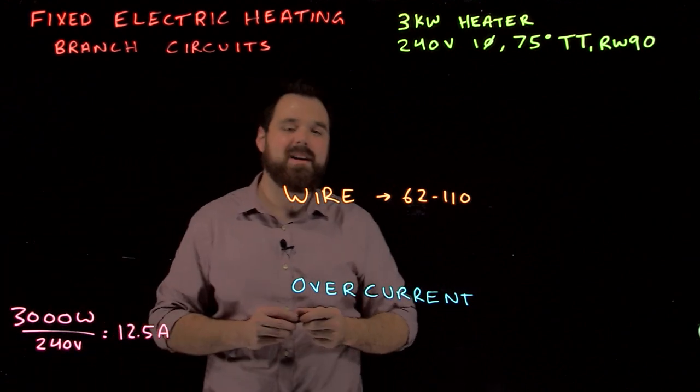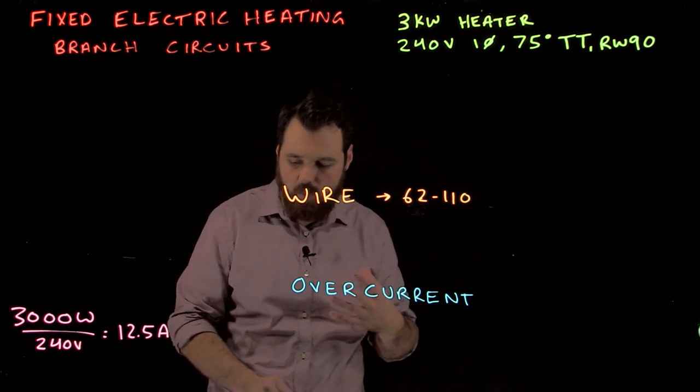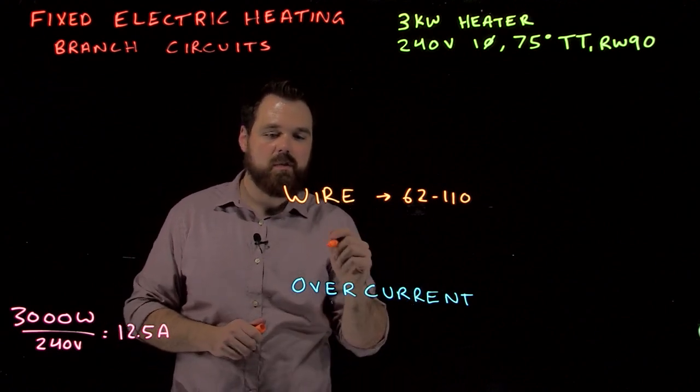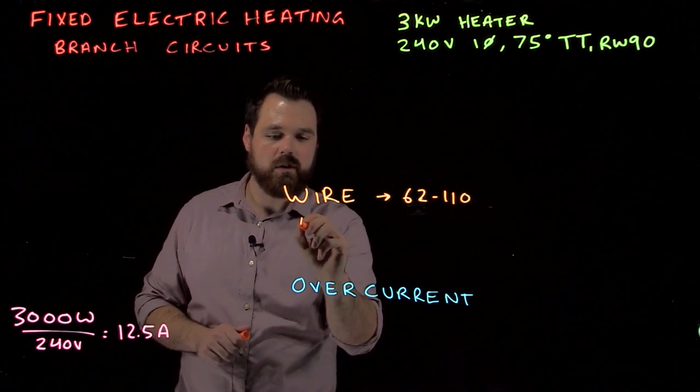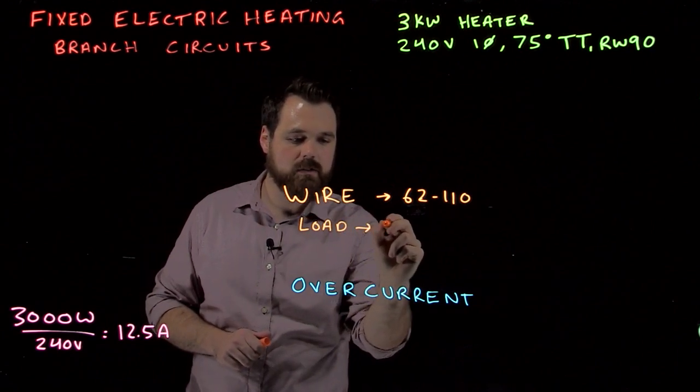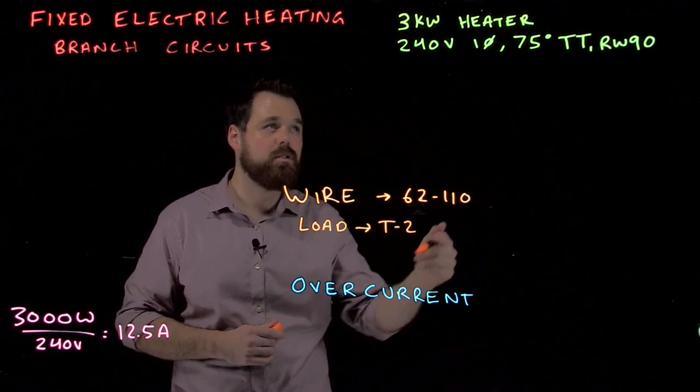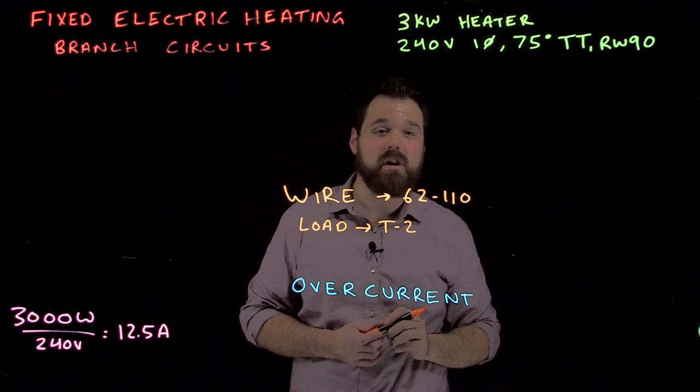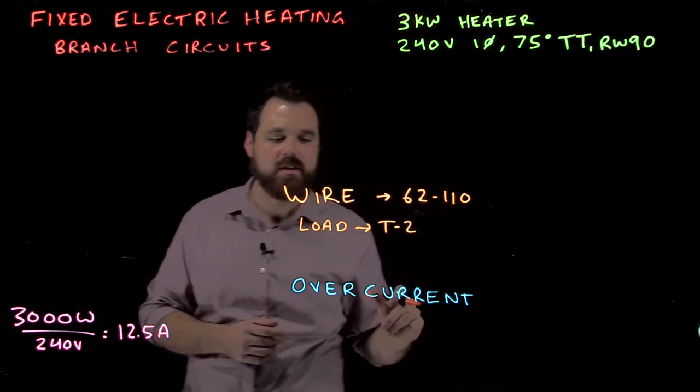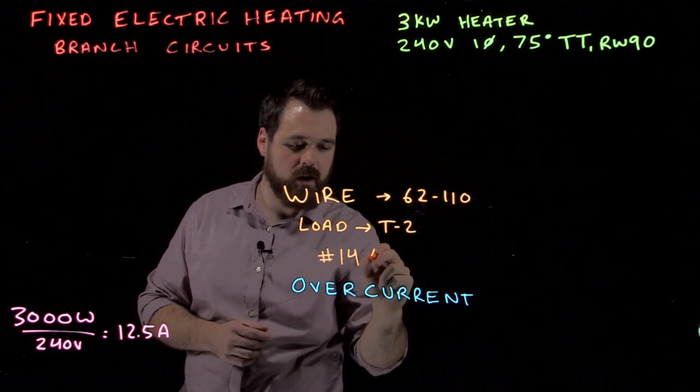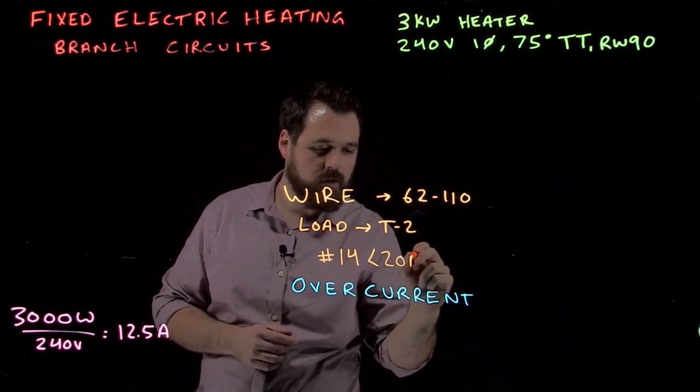That's the load that our wire needs to be able to carry. Well, in this case we take our 12.5 amps, we go with our load directly to table 2. In this case, table 2, using the 75 degree column due to our 75 degree termination temperature, we end up with a number 14 gauge wire which is good for 20 amps.